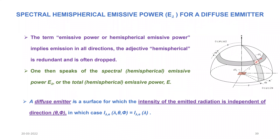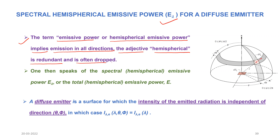We are going to discuss the spectral hemispherical emissive power e_lambda for a diffuse emitter. The term emissive power or hemispherical emissive power implies emission in all directions. The adjective 'hemispherical' is therefore redundant and is often dropped, because hemispherical itself means in all directions. So we can drop this adjective and call it only as the emissive power. For spectral hemispherical emissive power e_lambda, we can remove 'hemispherical' — that is why it is placed in brackets — and call it simply the spectral emissive power.